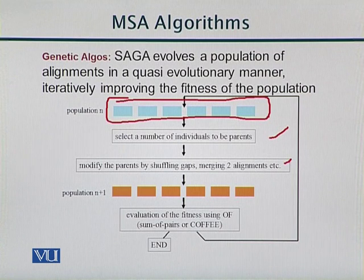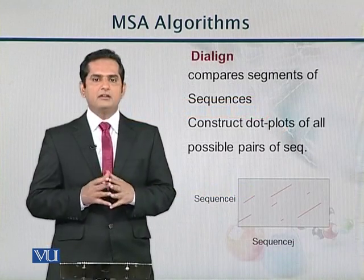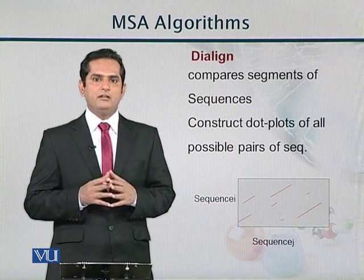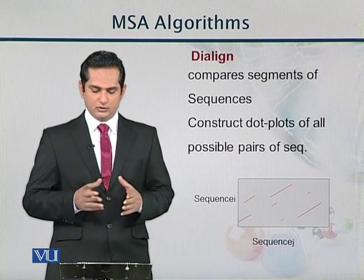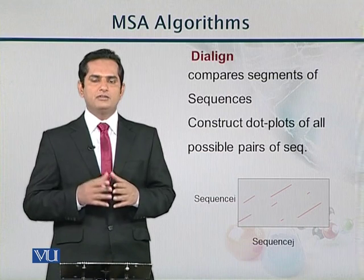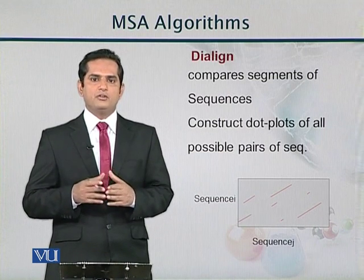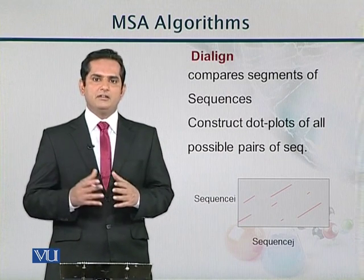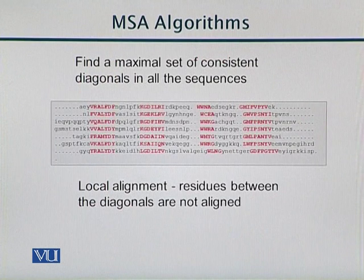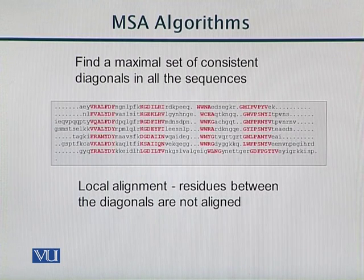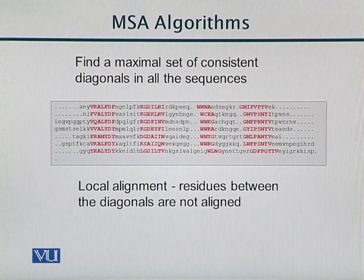The DIAlign method, instead of comparing individual characters, makes segments of characters. One segment is taken along the x-axis and another along the y-axis. We find similarities between those sequences, shown with dot plots — a visual alignment technique showing which segment pairs are comparable. The steps involve finding a maximal set of consistent diagonals, where matching characters appear on the diagonals, and gaps represent insertions or deletions.